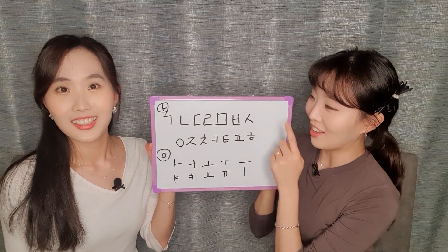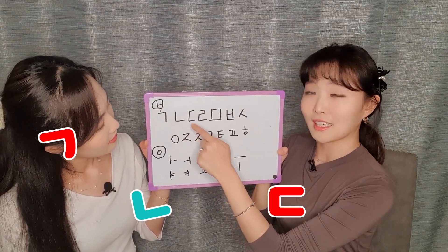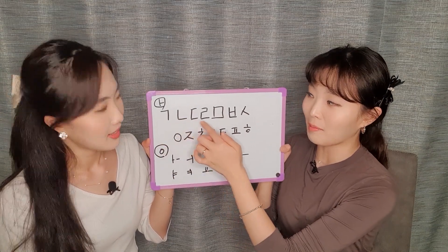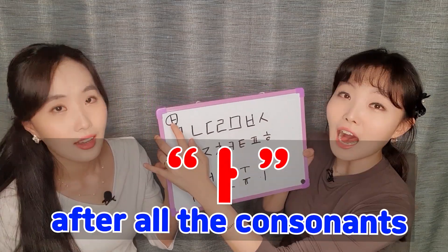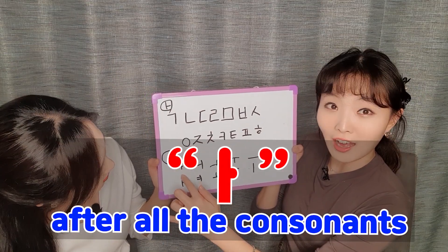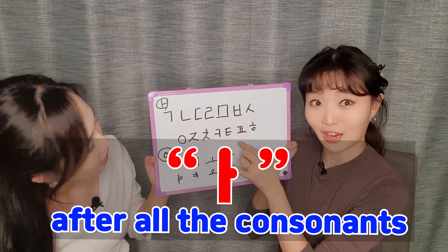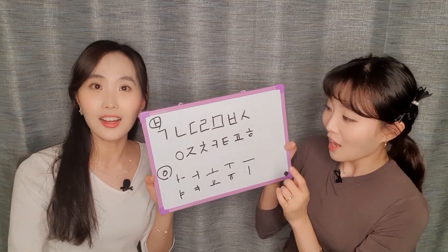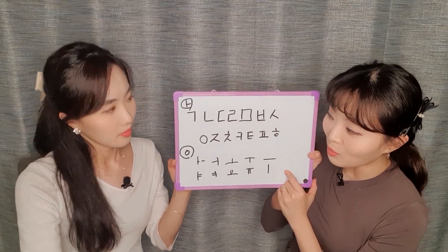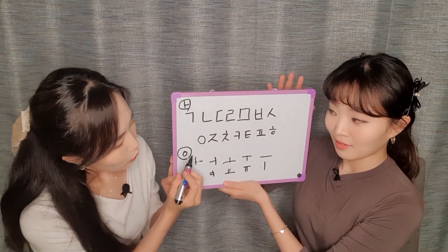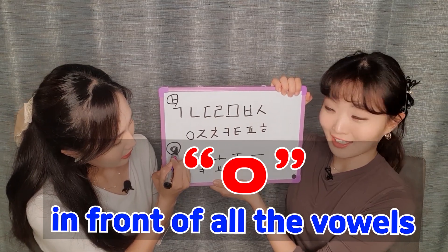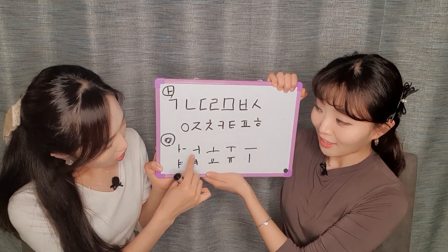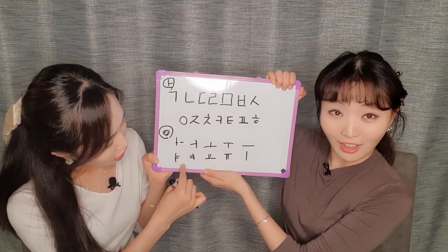We learned the consonants as ㄱ, ㄹ, etc. But we said ㄱ, ㄹ — meaning we put ㄷ in front of all the consonants. That's how we read the consonants in Korea. And for the vowels, why did we say ㄹ, ㄹ? We put ㄹ in front of all the vowels.